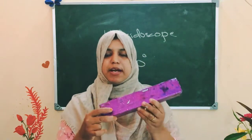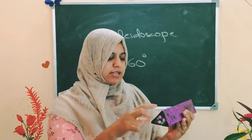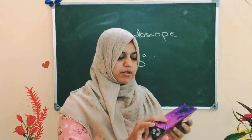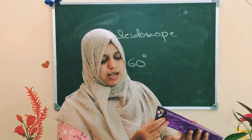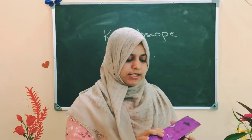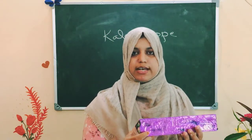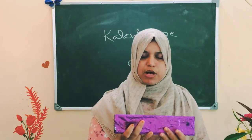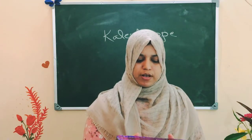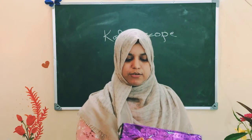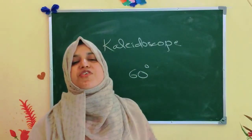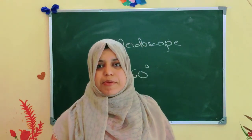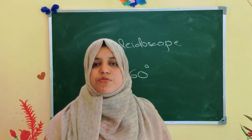Here I made one kaleidoscope. I used three plane mirrors, each 15 centimeters long and 4 centimeters wide, and I wrapped the kaleidoscope with colored paper to make it attractive. Now I am showing you the pattern you get from this kaleidoscope — you can see a very beautiful pattern through the camera.